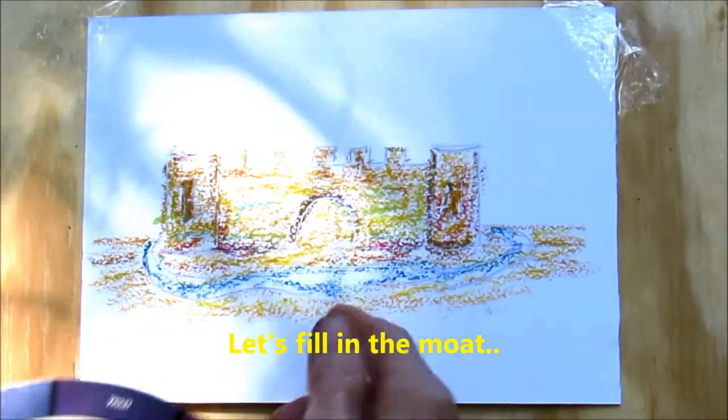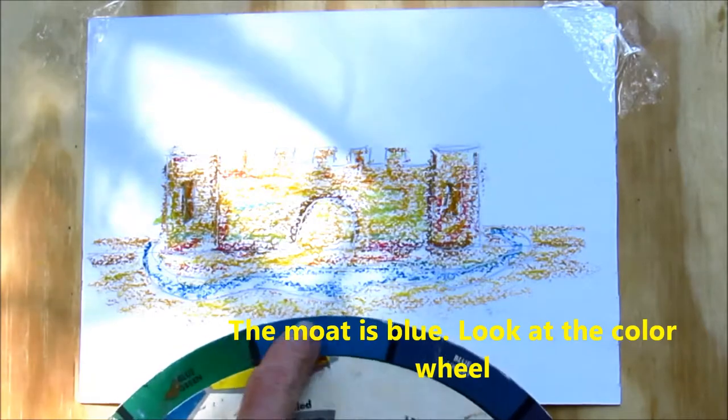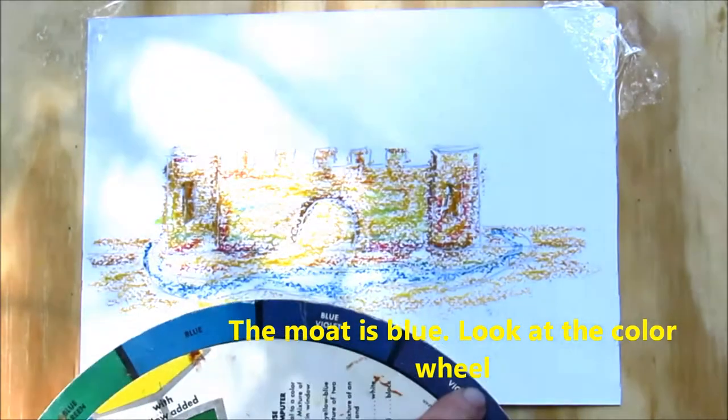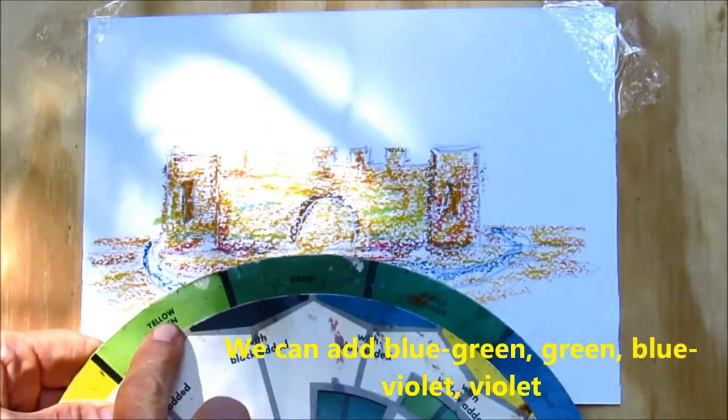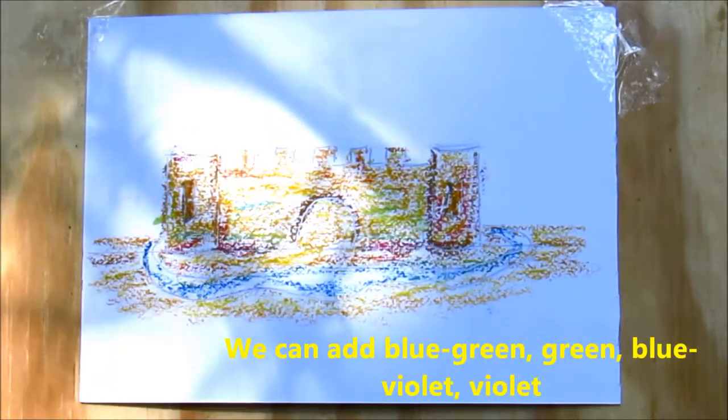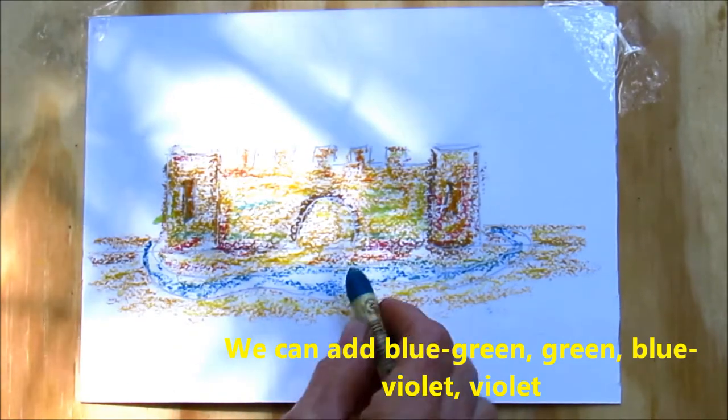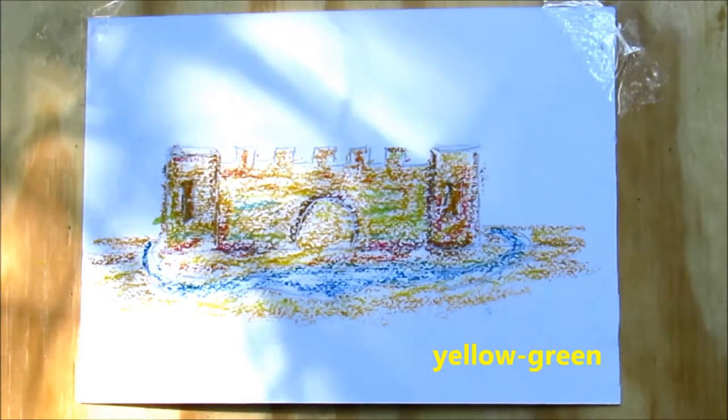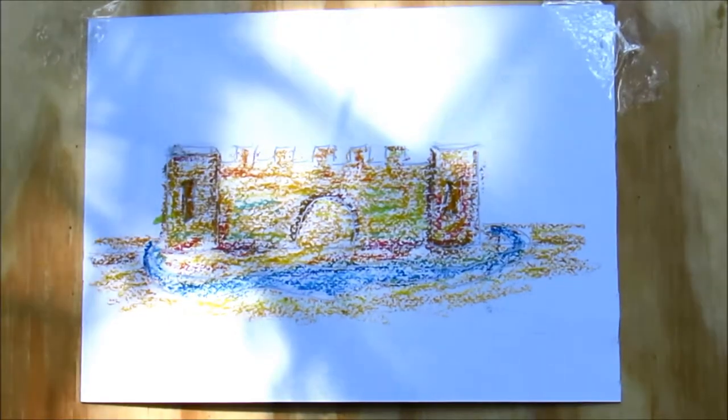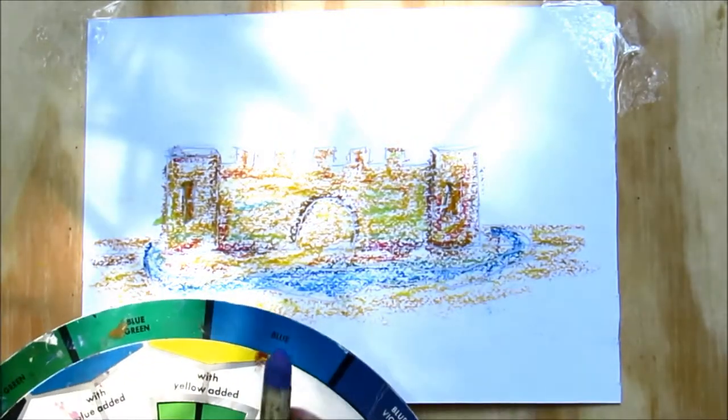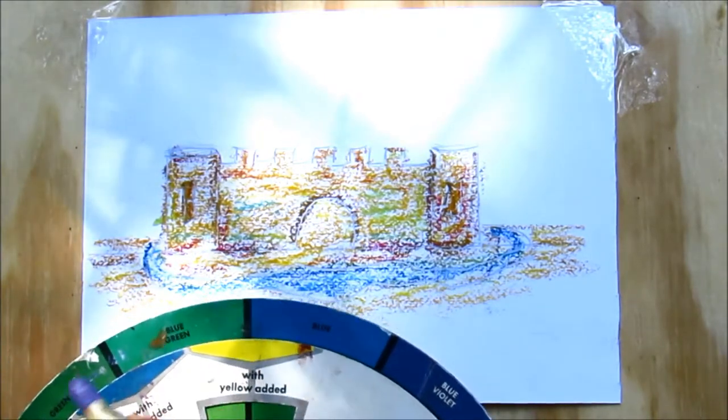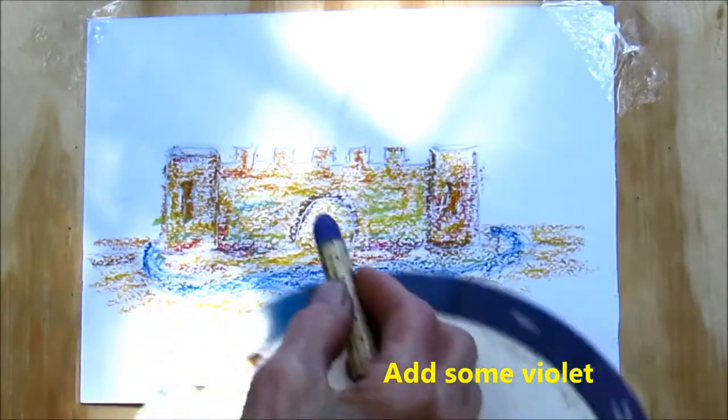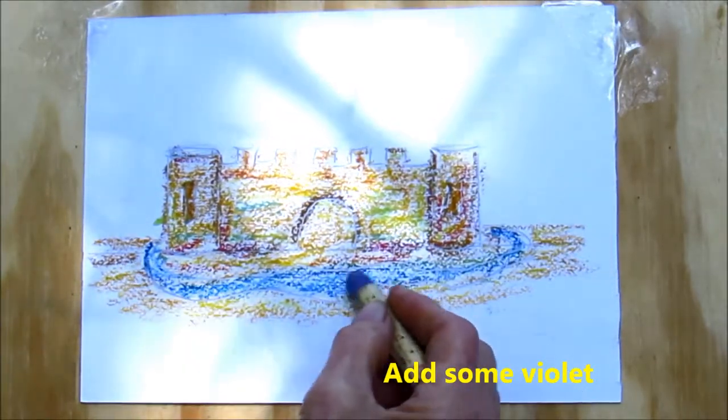Now the moat is blue, so we look at our color wheel, and we're going to put blue-green, green, blue-violet, violet, maybe some yellow-green in the water. So we'll start with a blue-green. We're on the moat, and we can add a little violet in the water because the water is blue, and blue-violet and violet are close to blue. So let's add a little violet.